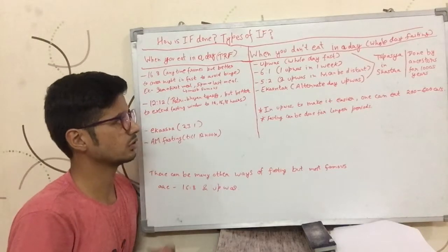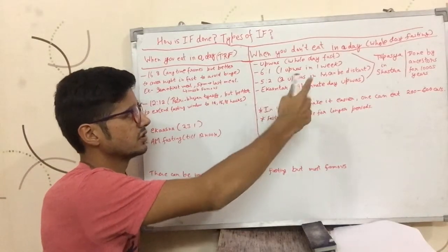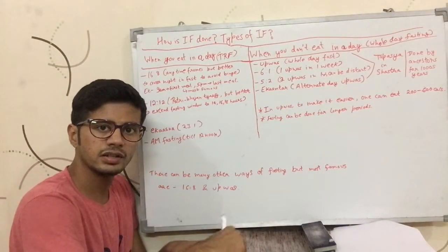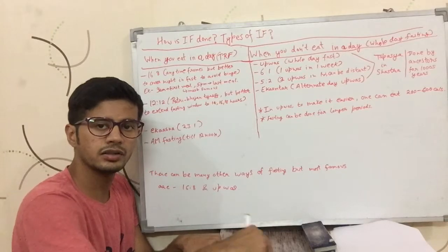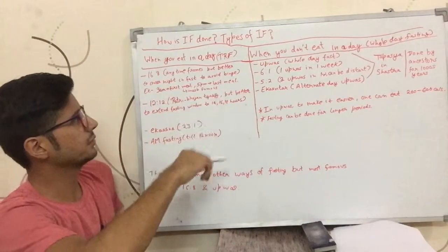Now Ekantar—this is what we call it in Hindi—which is alternate day fasting. So you eat one day and you don't eat the next day, then you again eat the third day, then you don't eat the whole day, and you keep doing that.